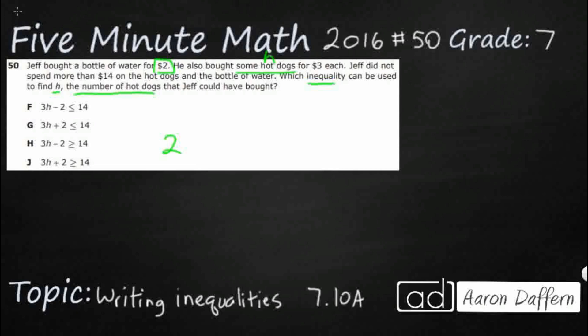We represent hot dogs with H. For $3 each, I'm going to do H hot dogs times my $3. So one hot dog would be $3, two hot dogs would be $6, three hot dogs would be $9, and so on and so forth.